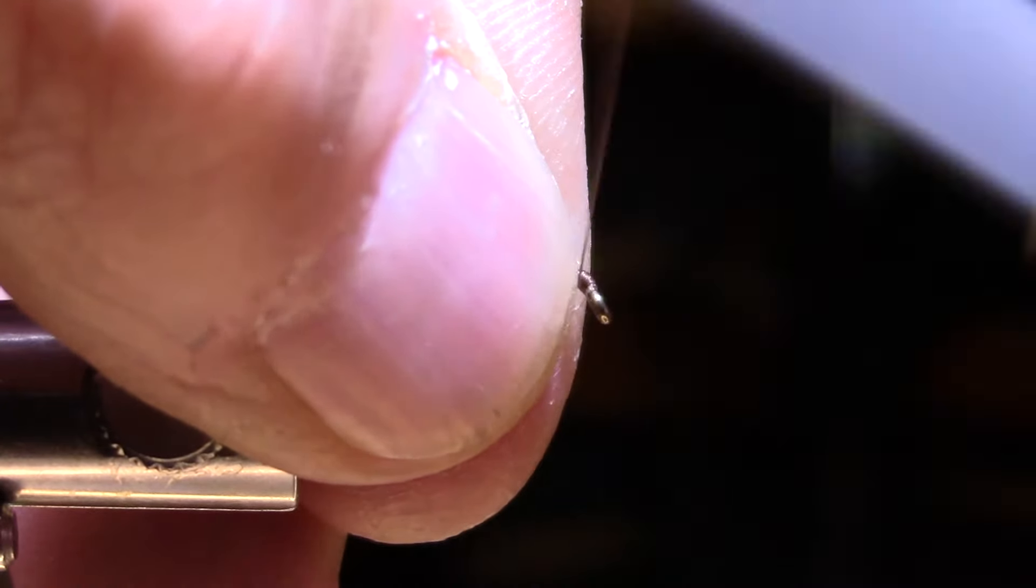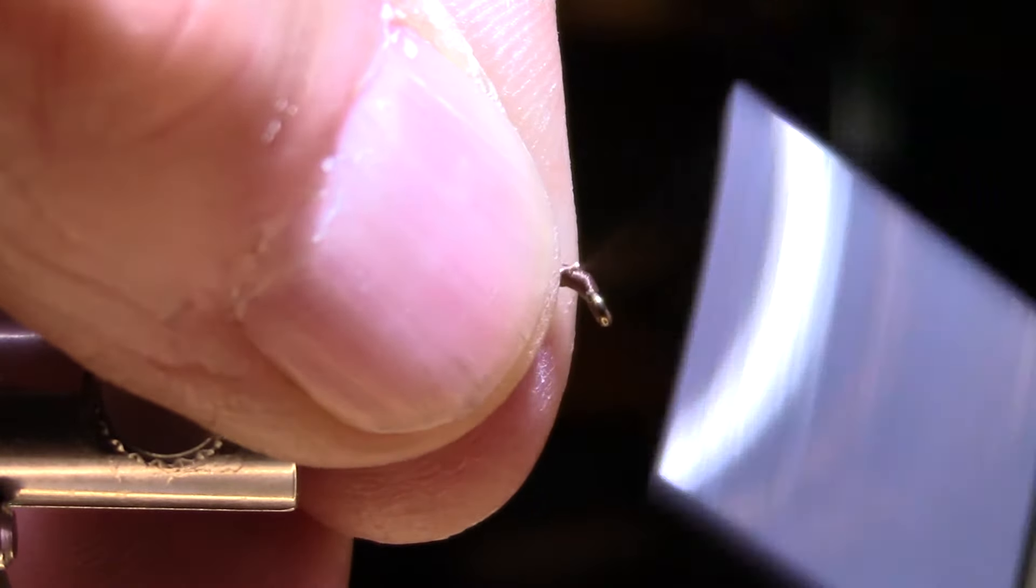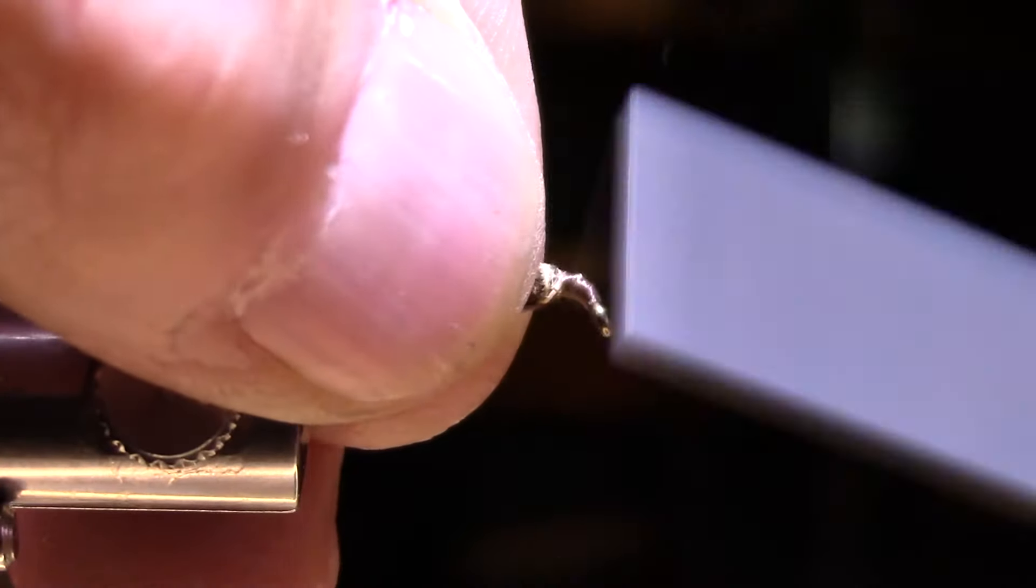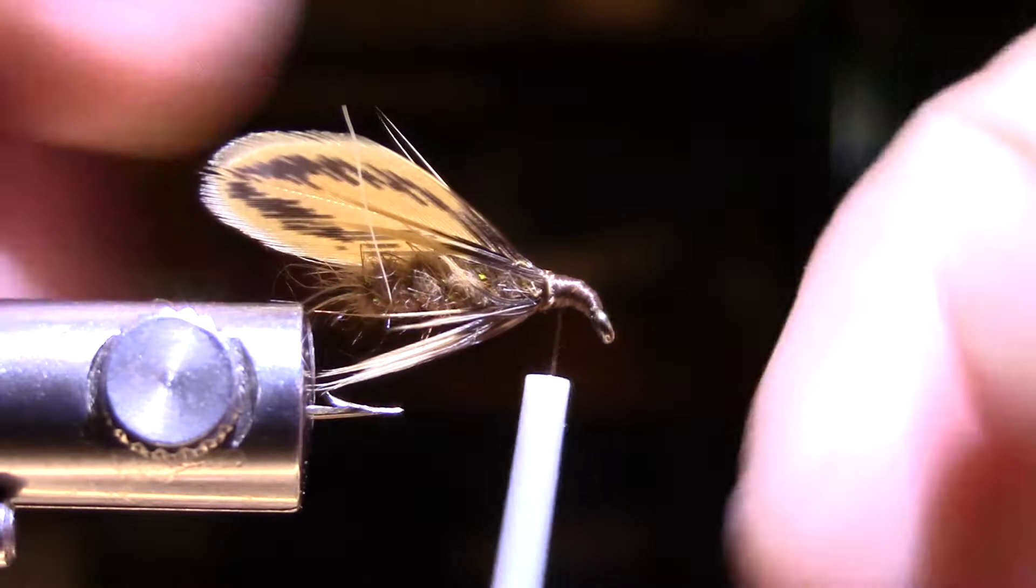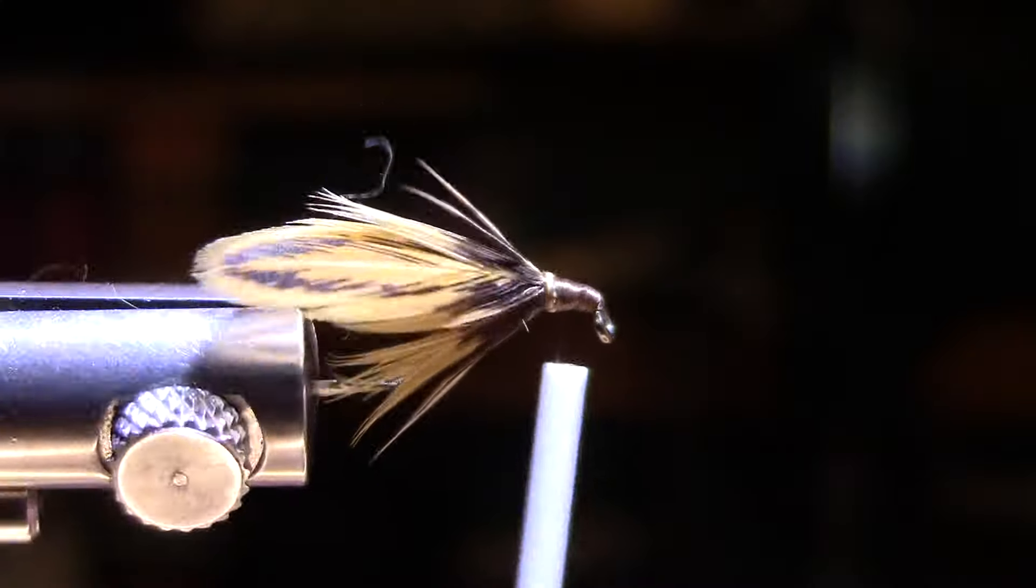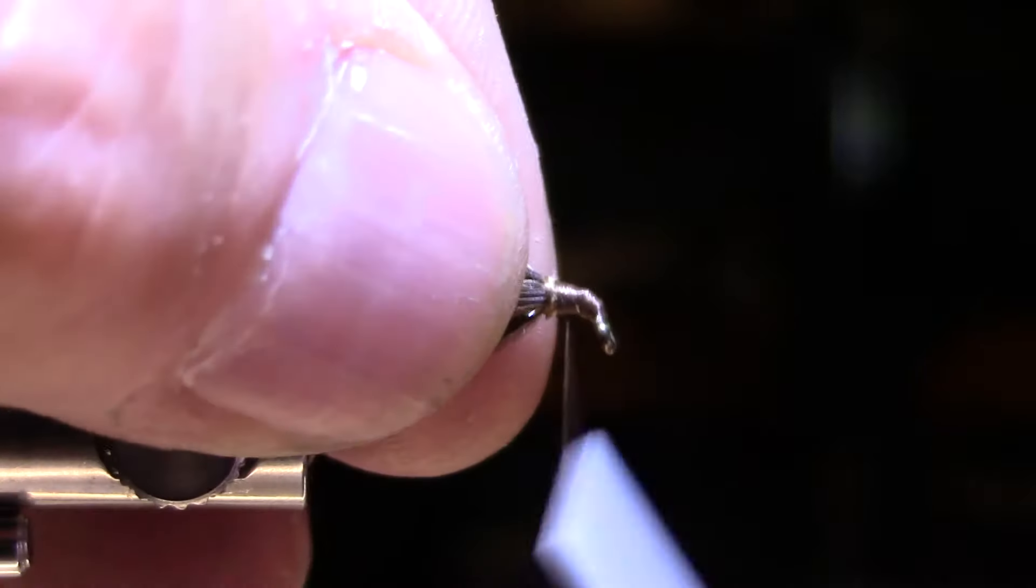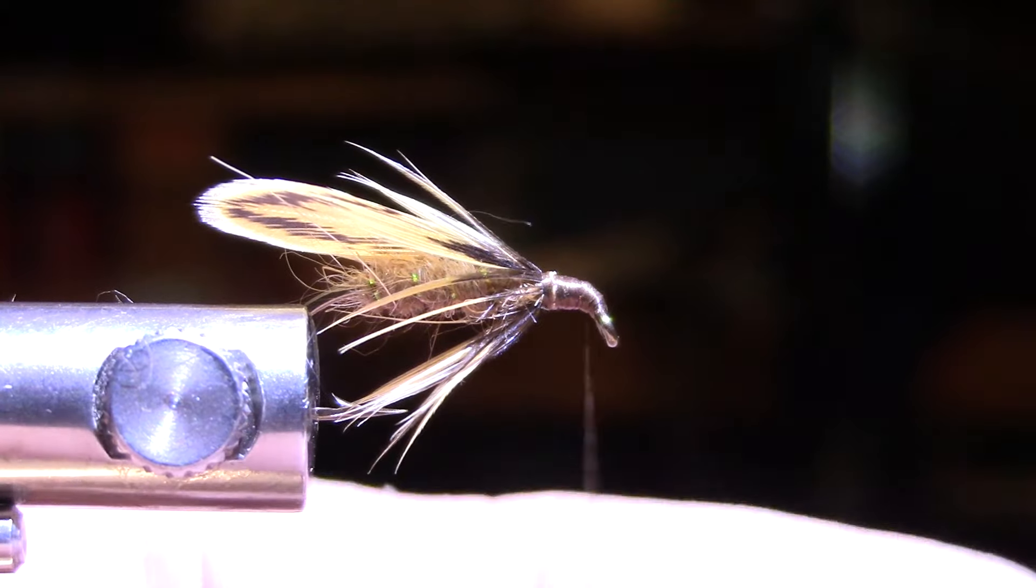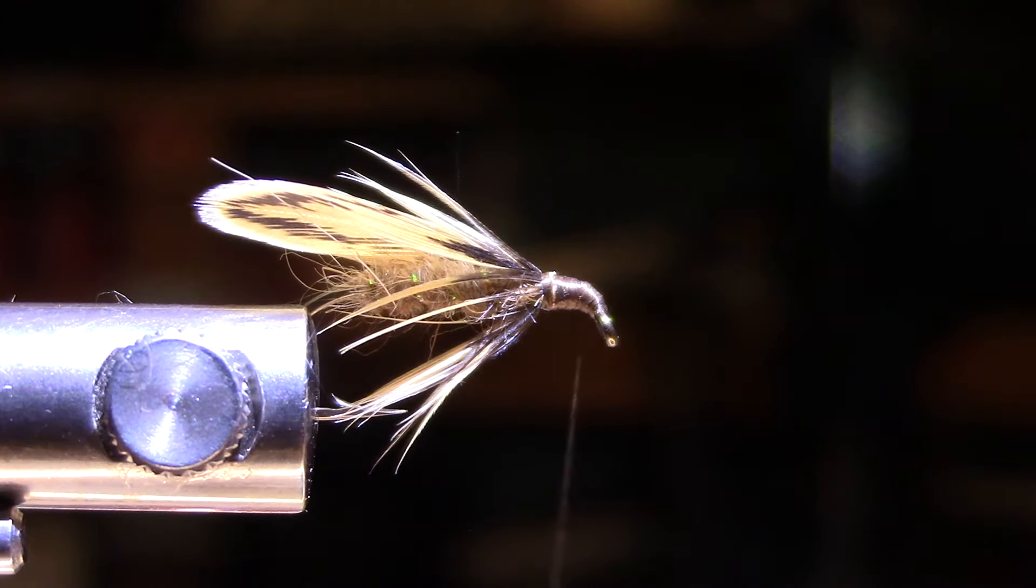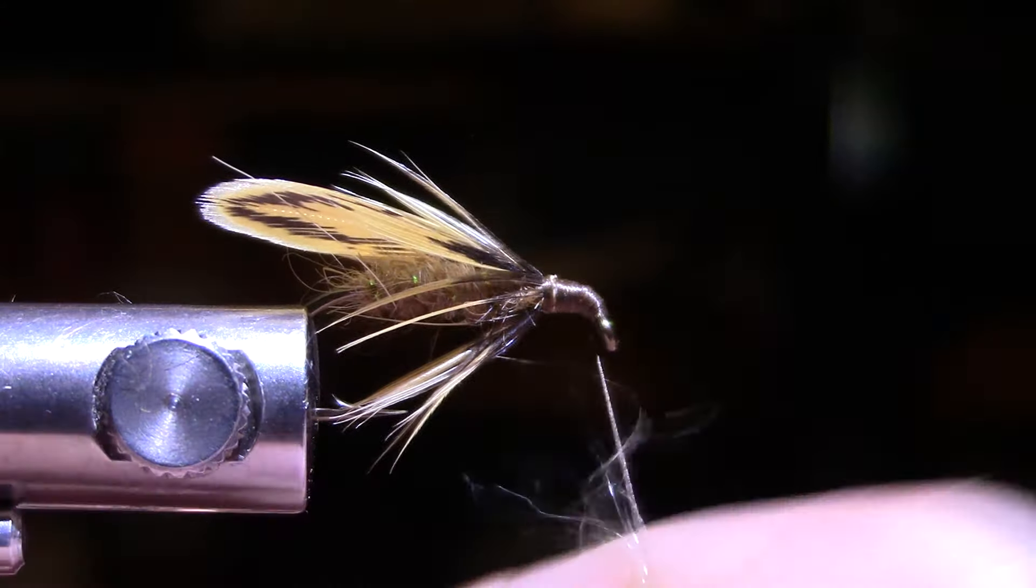Alright, sweep those back. Now some of these, especially these old Mustad hooks, you might have a gap there with that eye, so you want to make sure you close that gap up with thread. And then build yourself a head. If you think you're too far back here, you can always add a little dubbing. I just want to make sure that that fly doesn't come off. Maybe that feather looks like the head is maybe a bit too big, so I'm just going to add just a touch of dubbing in front there.